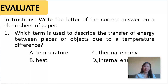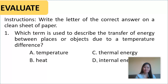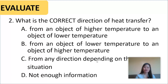Now let us test what you have learned. Get a clean sheet of paper and write the letter of the correct answer. Are you ready? Number one: which term is used to describe the transfer of energy between places or objects due to a temperature difference? A — temperature, B — heat, C — thermal energy, or D — internal energy.